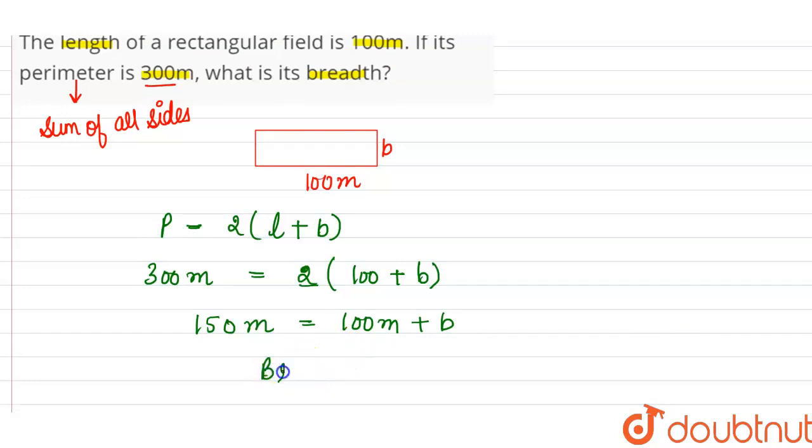So we can say that the breadth of the rectangle will be equal to 150 minus 100 meter. So 150 minus 100 means 50 meter. So we can say that the breadth of the rectangular field is 50 meter.